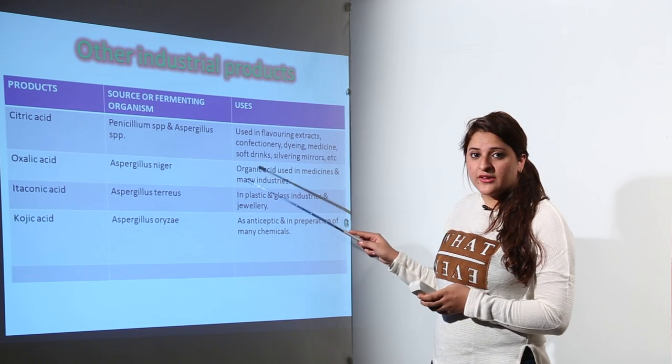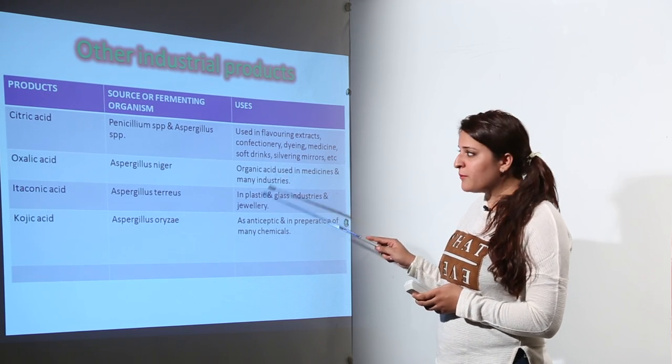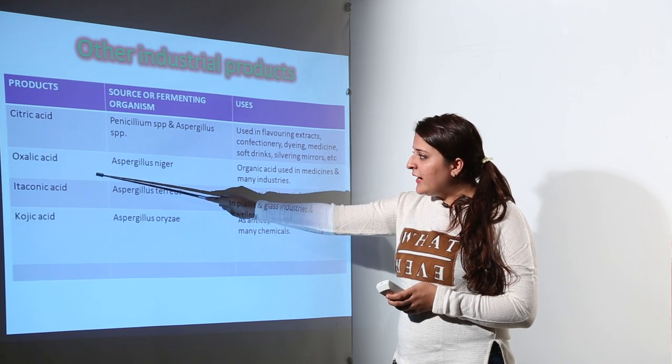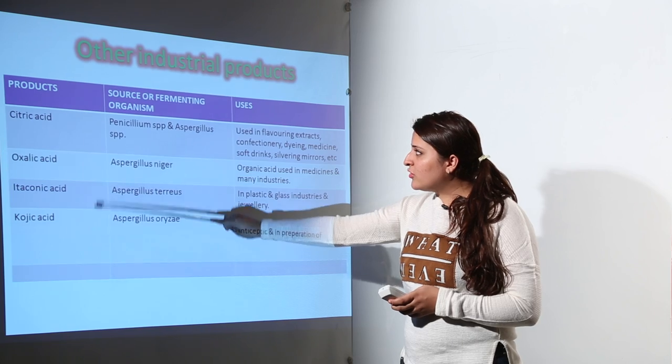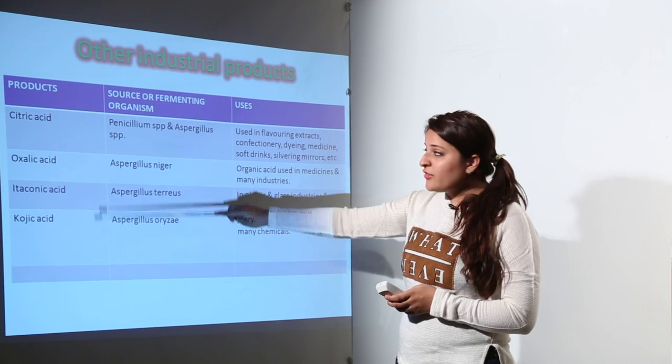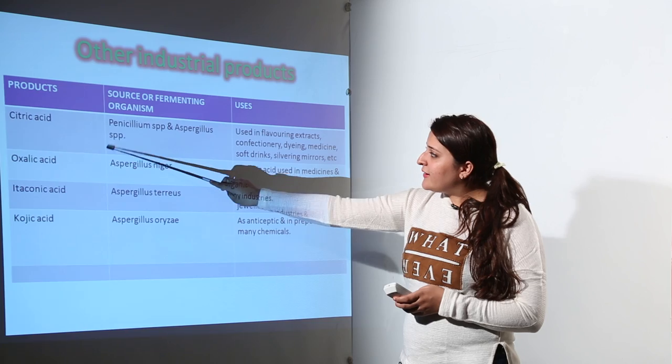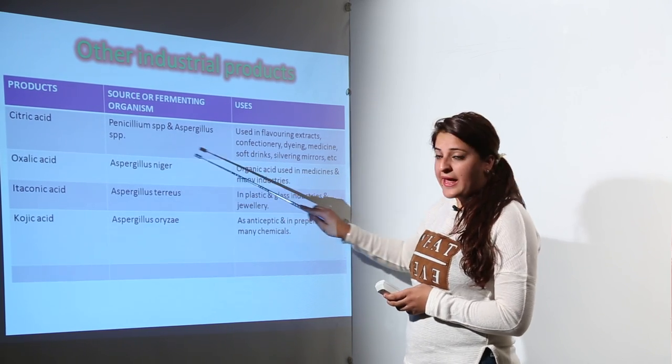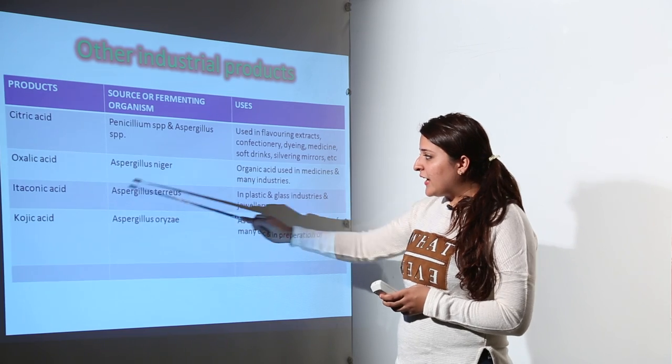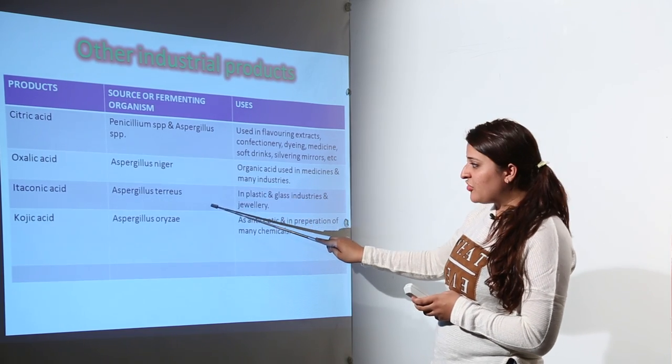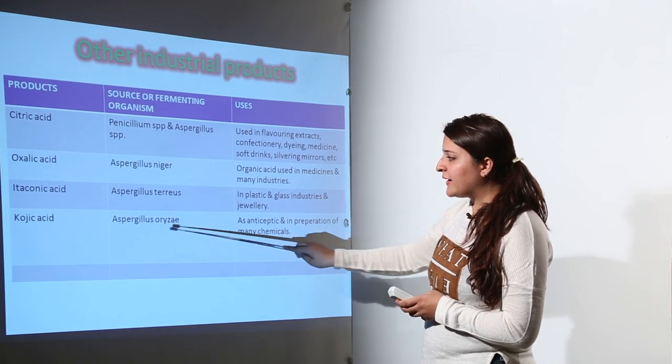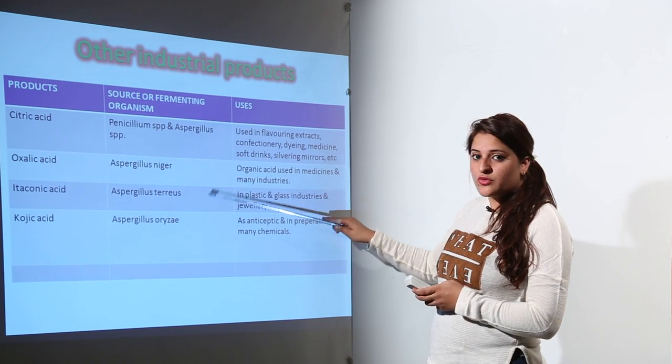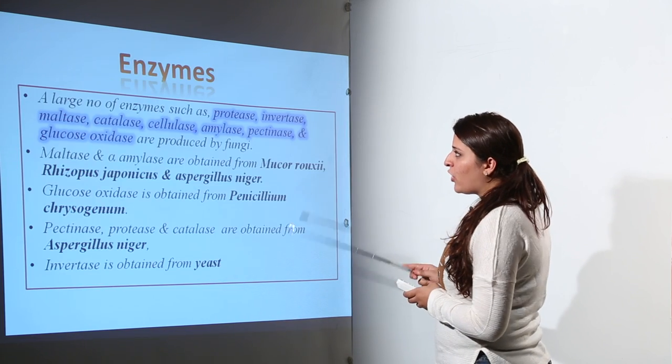Industrial products synthesized by fungi include citric acid, oxalic acid, itaconic acid, and kojic acid. Citric acid is synthesized by Penicillium and Aspergillus. Oxalic acid by Aspergillus. Itaconic acid by Aspergillus species, and kojic acid by Aspergillus oryzae.